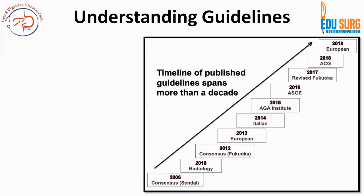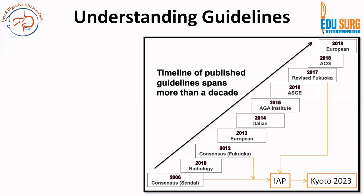When we talk of guidelines on the topic of pancreatic cystic neoplasms, there have been at least 10 or more guidelines. Some are from the same group and have undergone multiple revisions. The IAP group consensus was 2006 (Sendai), 2012 (Fukuoka), then revised in 2017, and in 2023 it is the Kyoto guidelines.